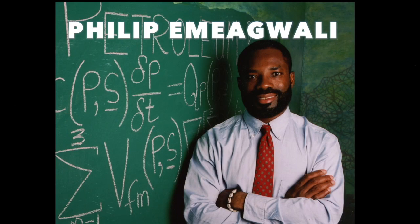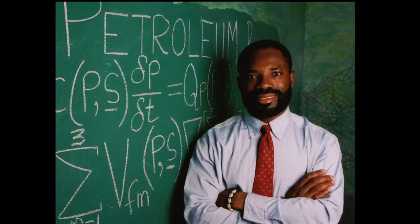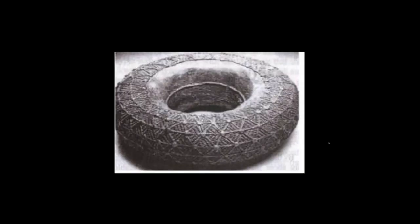Nigerian-born physicist and super scientist Philip Emegwale, who was known as the father of the internet, invented his model of the hyperball to create the internet grid, inspired by the ancient Ibo hyperball constructed by our ancestors.